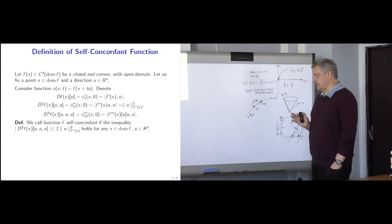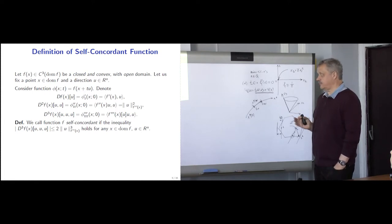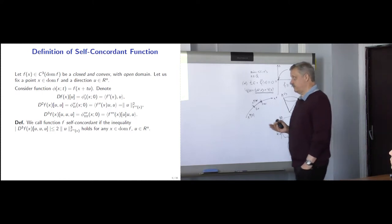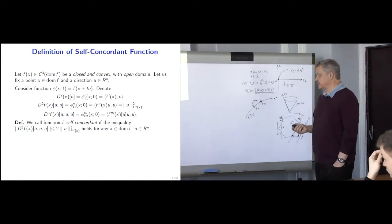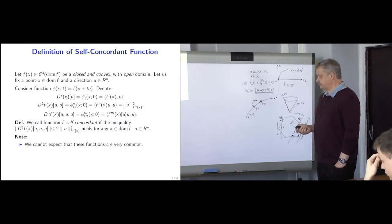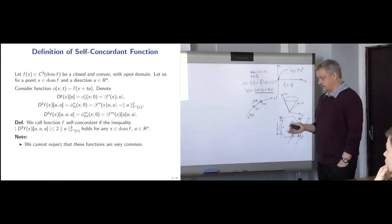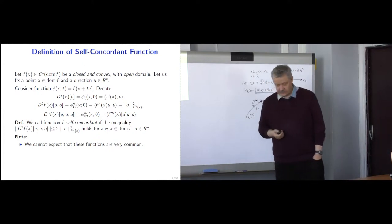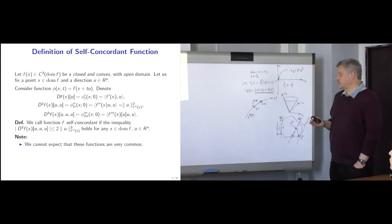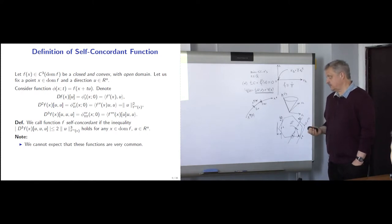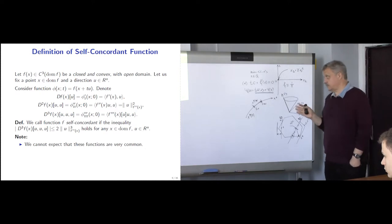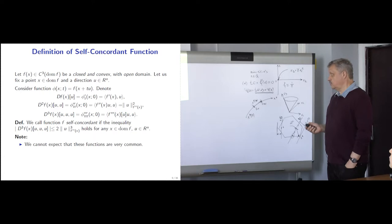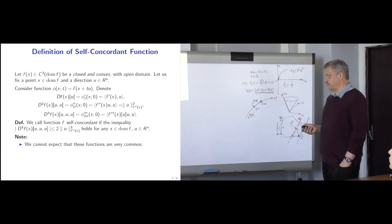The goal of this definition is to find a class of functions that is good for an affinely invariant Newton method. We introduce this definition, and of course we cannot expect that such functions arise very often in applications. This is fine for our goal because we need them just to form barrier descriptors of our convex sets. At this moment we just need to be sure that the family of self-concordant functions is rich enough.